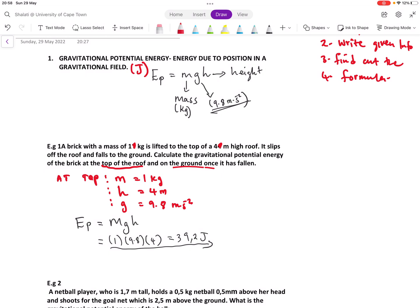Then let's calculate at the bottom or on the ground. Let's draw a simple diagram to illustrate this. Here is the top of the roof. This roof is four meters high. At the bottom, the height is zero meters. You can already see that your gravitational potential energy at the ground will be zero. We can calculate Ep equals to mgh. M is also one kilogram, g will stay the same, it's always 9.8, and the height is zero. Everything multiplied by zero is zero joules.